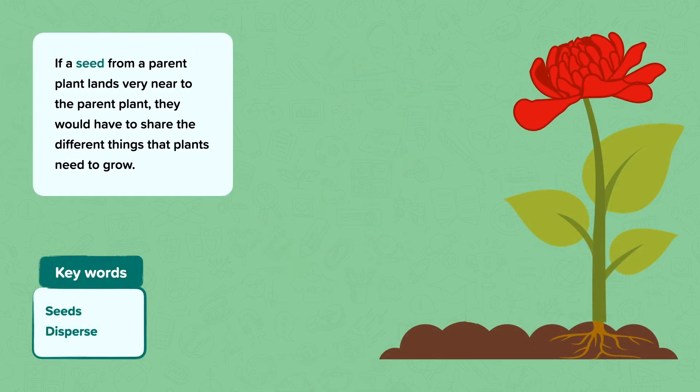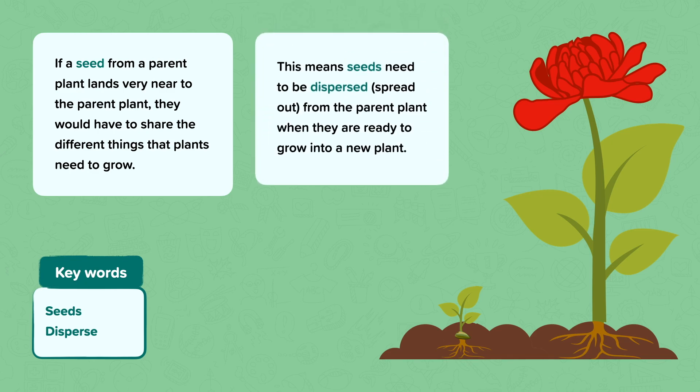If a seed from a parent plant lands very near to the parent plant, they would have to share the different things that plants need to grow. This might lead to there not being enough space, light, water, air and nutrients for both plants to grow well. This means seeds need to be dispersed, or spread out, from the parent plant when they are ready to grow into a new plant.